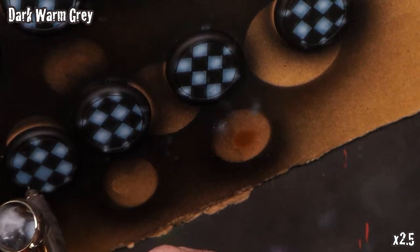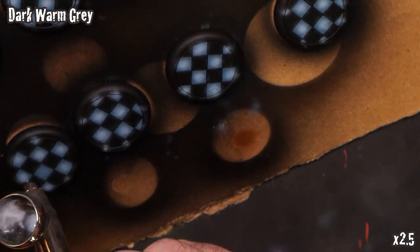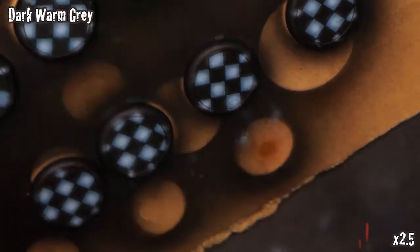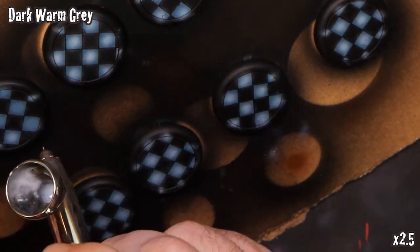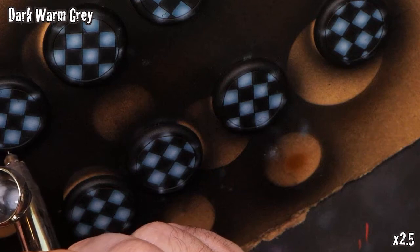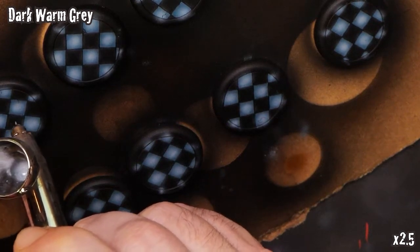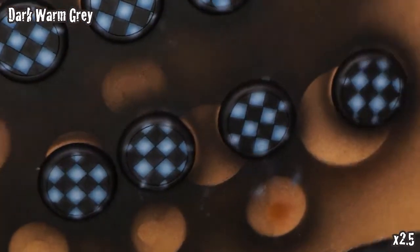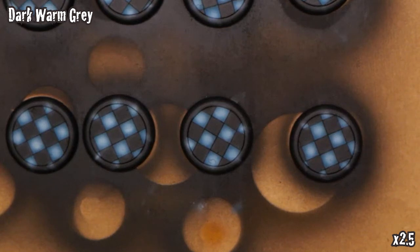One thing I did not quite capture in this video is there's a slight touch up on the black panels after we apply this Arctic Blue, where we apply some Dark Warm Gray to the black panels in a very similar fashion. You might notice a slight shift, it's very subtle. You could potentially skip this step.